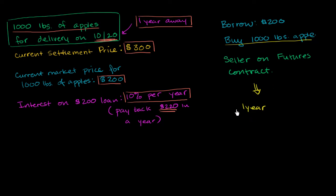So I give the apples to settle the futures contract. And then, of course, I have my loan. I have my loan of $200. But guess what? When I settled the contract, I got $300.